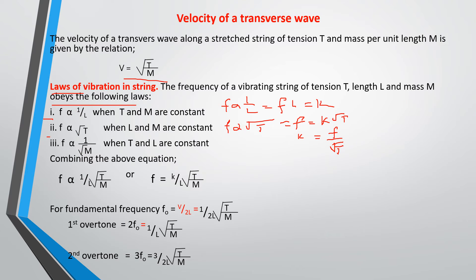Combining these equations, frequency is directly proportional to 1 over L and proportional to the square root of tension, and inversely proportional to the square root of mass per unit length. Bringing in the equation for fundamental frequency f₀ equals V over 2L and substituting V equals √(T/m), we get f₀ equals (1/2L) × √(T/m).